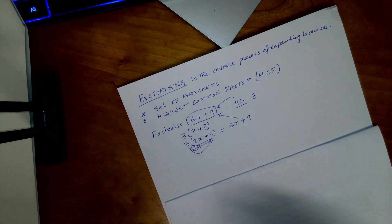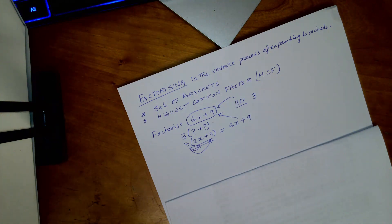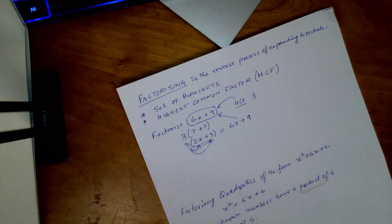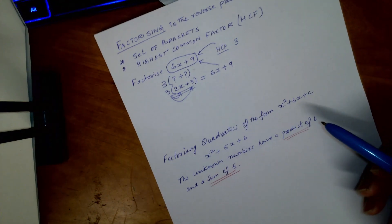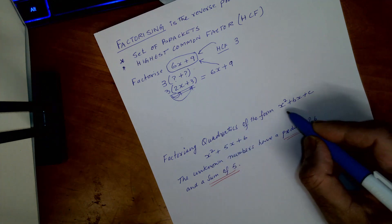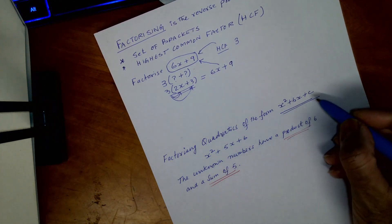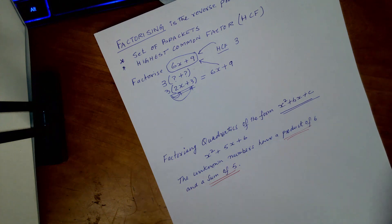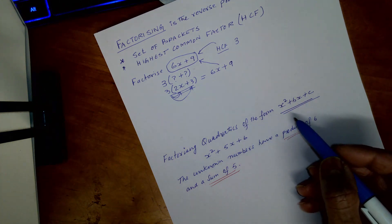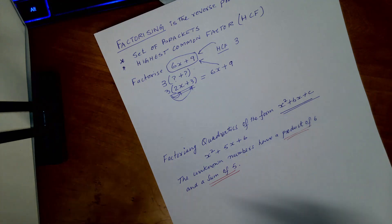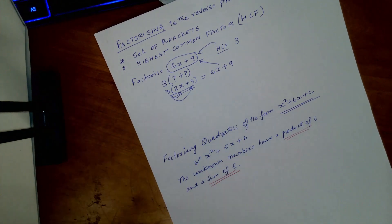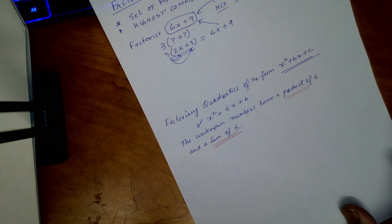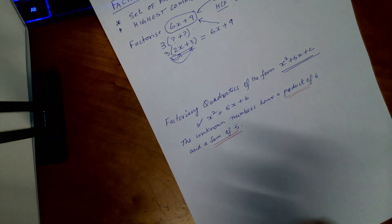Okay, I hope you understand this. Now we're going to move on to factorizing quadratic form. And in this form you have quadratic equation which is x square, bx plus c. And that equation we have here is x square plus 5x plus 6. So this is your quadratic equation.